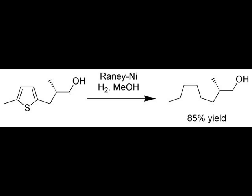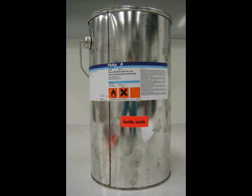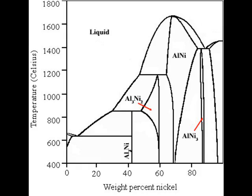Following the development of Raney Nickel, other alloy systems with aluminum were considered, of which the most notable include copper, ruthenium, and cobalt. Further research showed that adding a small amount of a third metal to the binary alloy would promote the activity of the catalyst. Some widely used promoters are zinc, molybdenum, and chromium. Recently, a way of preparing an enantioselective Raney Nickel has been devised by surface absorption of tartaric acid.